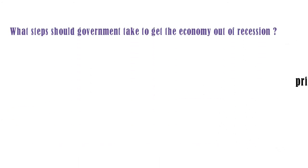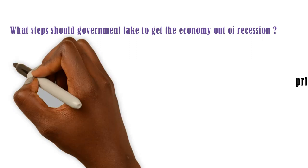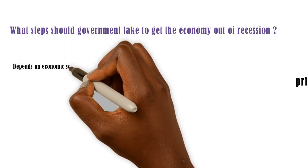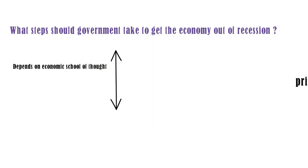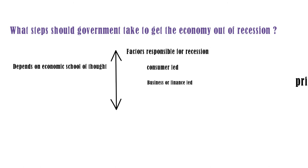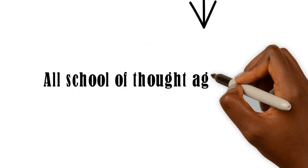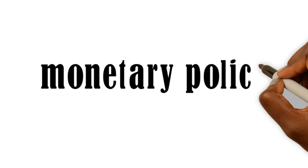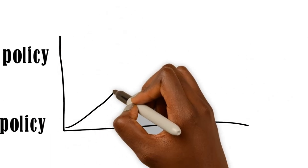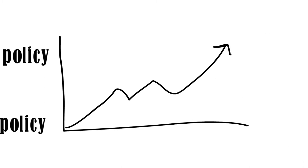The issue now is: what can the government do in a recession? That depends on the school of thought and where you stand, and whether the recession is consumer-led, business-led, finance-led, or government-costs-led. But what we have all agreed, generally, is that fiscal policy and monetary policy, properly put in place by government, can help the economy get out of recession.